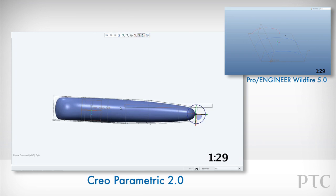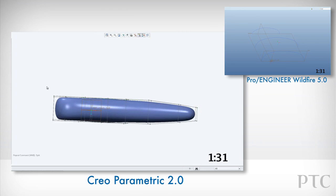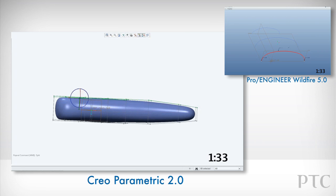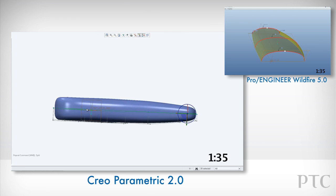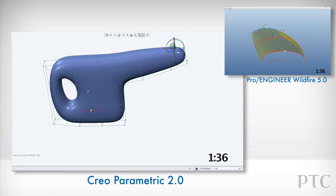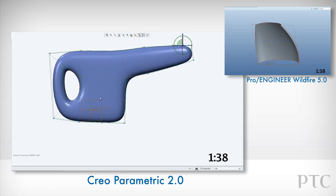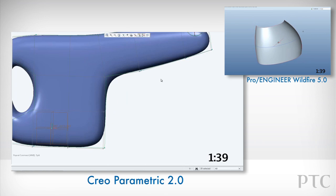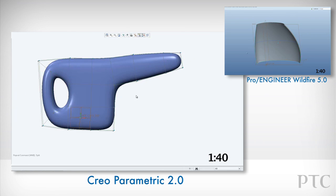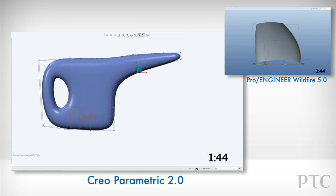Since we're designing a product that's symmetrical, we can use the mirror command. After selecting the mirror plane, half of the control mesh disappears. Any change that we make along the neck is mirrored to ensure a symmetric part. It's also possible to locally break mirror dependency.